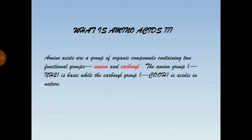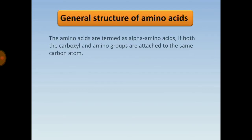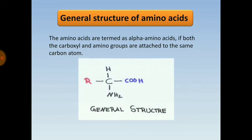Amino acids are a group of organic compounds containing two functional groups: the amino group (NH2), which is basic, and the carboxyl group (COOH), which is acidic in nature. Amino acids are termed alpha amino acids if both the carboxyl and amino groups are attached to the same carbon atom, called the alpha carbon.